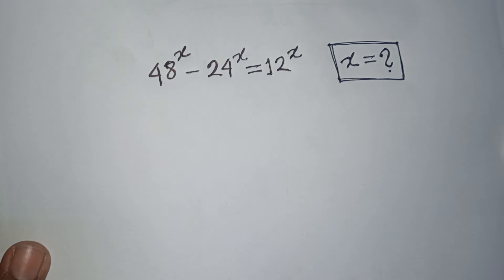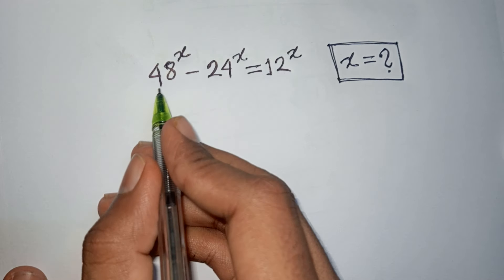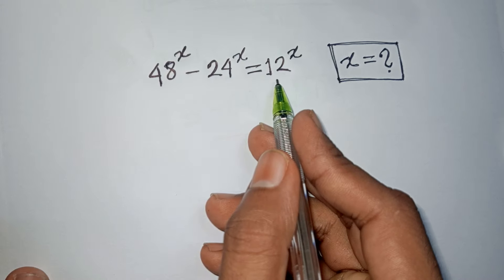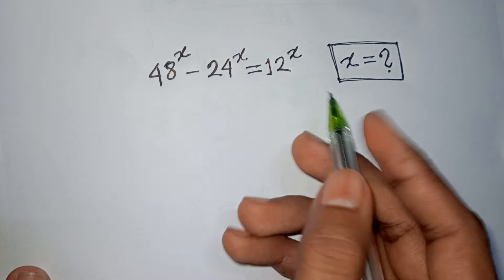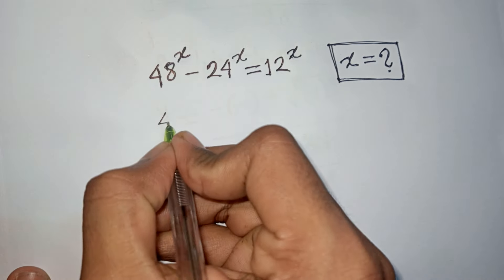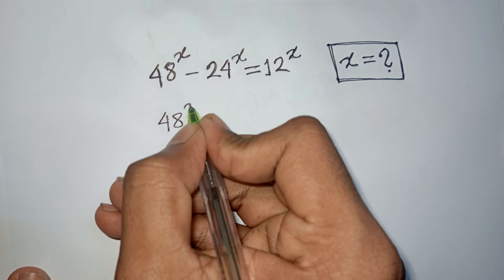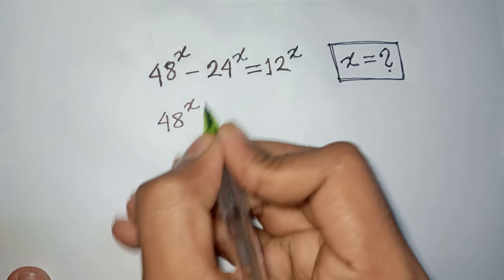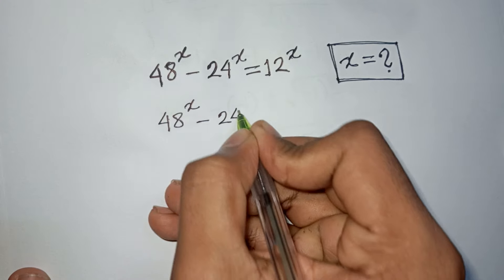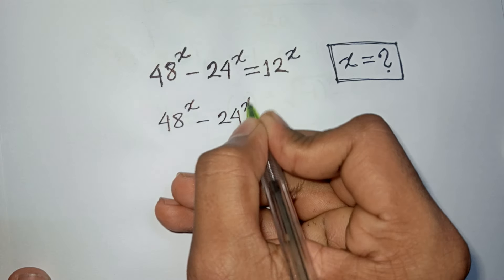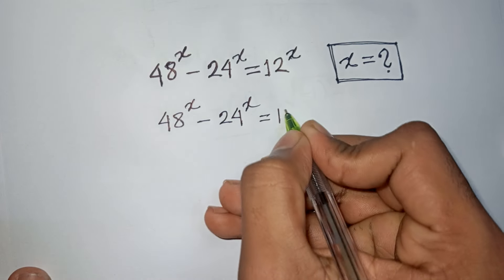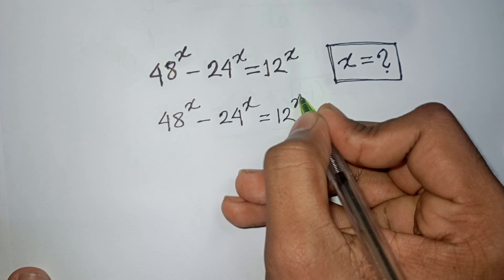How to solve 48^x minus 24^x is equal to 12^x for the value of x. So we have 48^x minus 24^x is equal to 12^x.